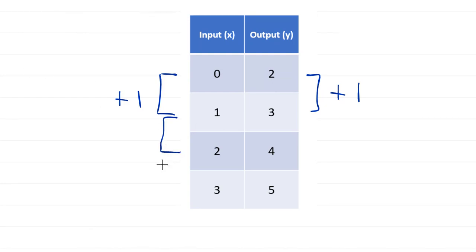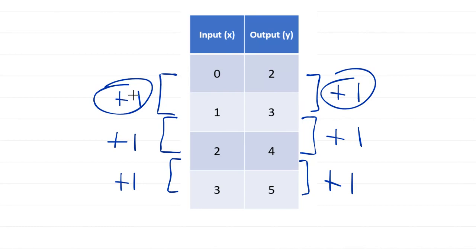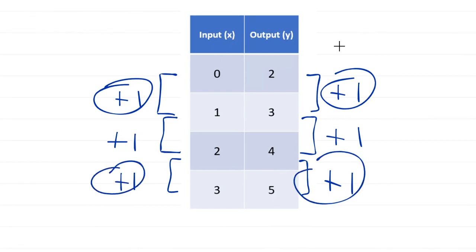If I go from 1 to 2, x increased by 1. If I go from 3 to 4, we still get the same increase in the output. And then likewise, from 2 to 3, x increased by 1, and from 4 to 5, y also increased by 1. So for every particular increase in x, we had the same increase in y. This is a linear function because every single particular change in the input gives me the same change in the output.